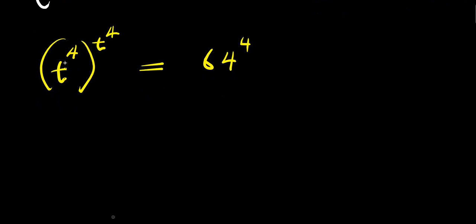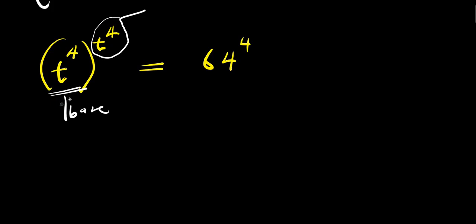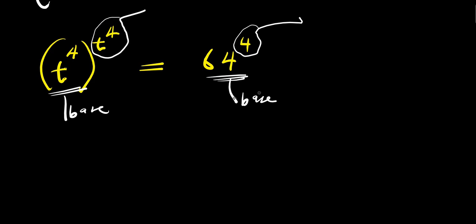Now we need to observe something. The base here is t to the power of 4 and the exponent here is also t to the power of 4 — that means they are the same. But on the right side, the base is 64 while the exponent is 4, meaning they are different. So for us to proceed with the solving, we need to ensure that the base and the exponent on the right are also the same.